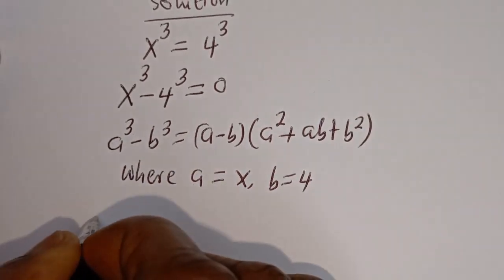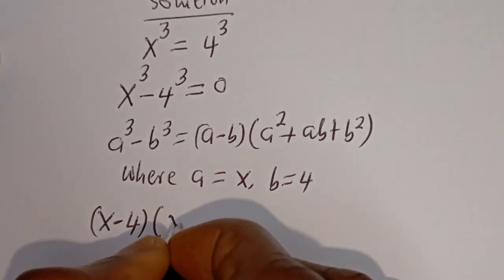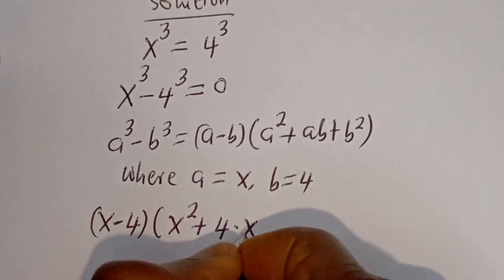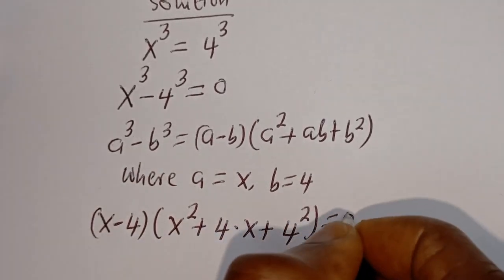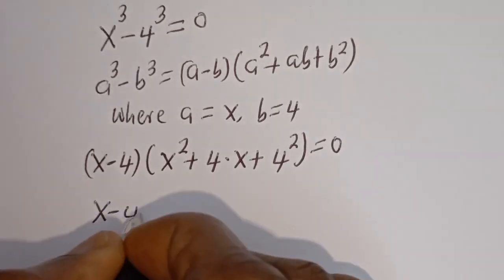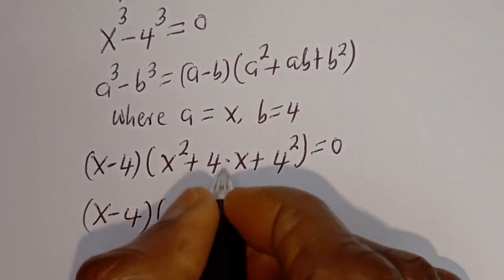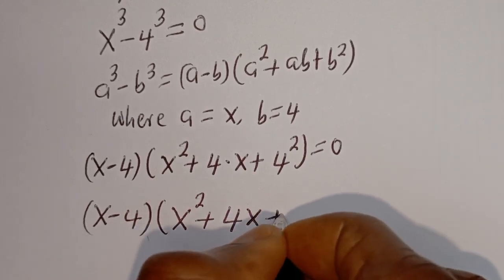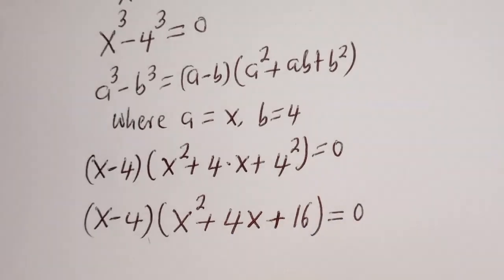Now we have s minus 4, bracket s squared plus 4 multiplied by s plus 4 squared, is equal to 0. That gives us s minus 4, bracket s squared plus 4s plus 16, is equal to 0.